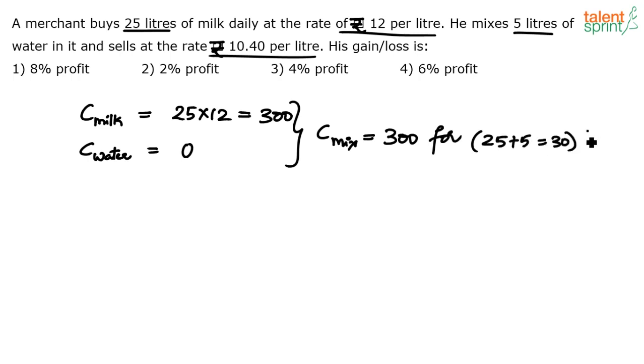So cost of mixture per liter—what is the cost per liter? ₹300 by 30. But I think we don't have to worry about per-liter cost, because anyway he's asking us to find the gain or loss in terms of percentage. When talking about percentage gain or loss, it doesn't matter whether you take it per liter or for the total quantity.